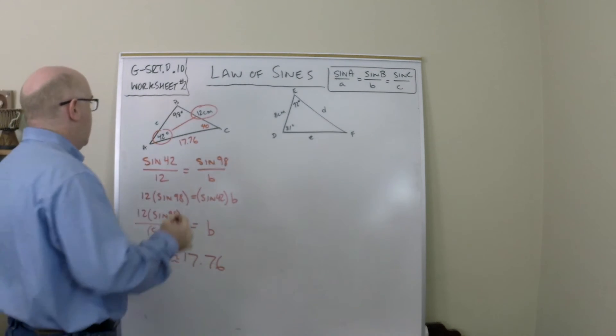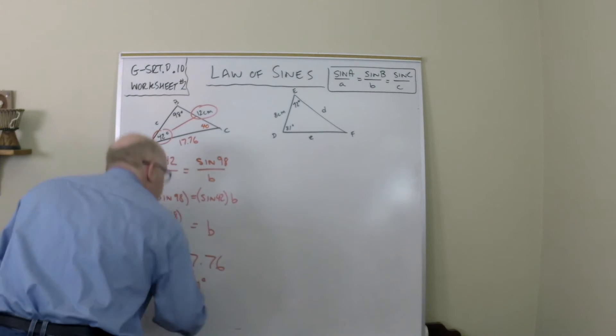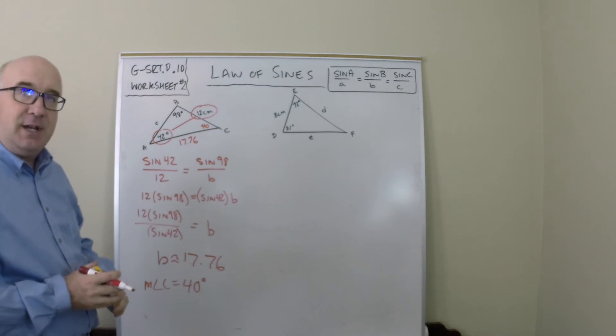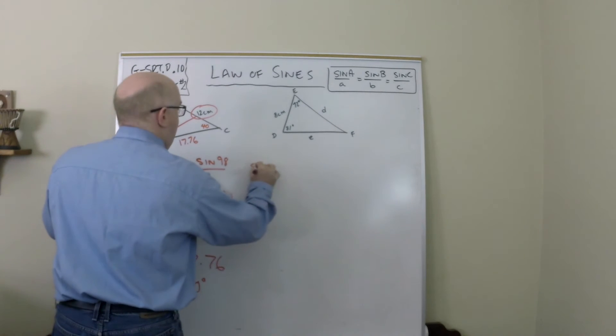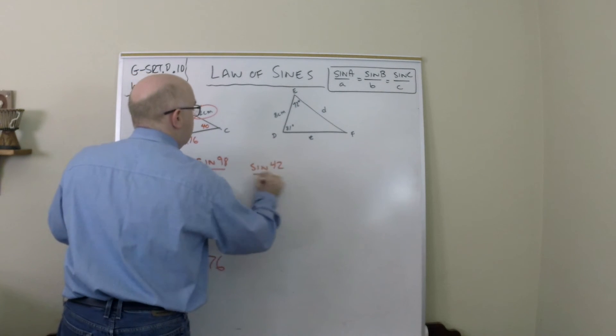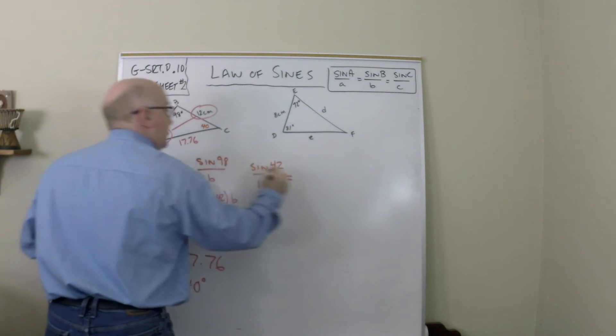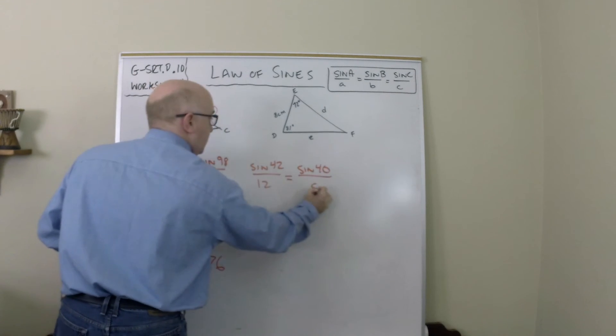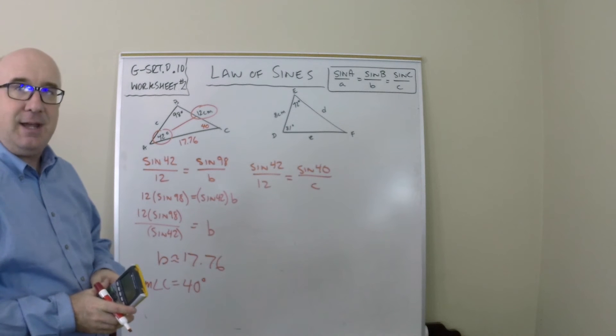So that's one more thing that we know. We know the measure of angle C is 40 degrees. The last thing is c. And maybe for time I won't calculate it. Let me set it up though. So I would use sine of 42 is to 12 as sine of 40 is to little c. And I would cross multiply and obtain that as well.